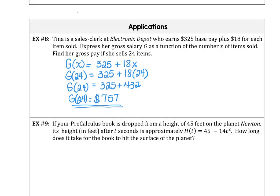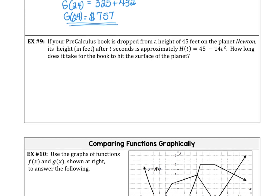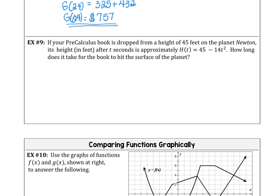Let's look at example nine. If your precalculus book is dropped from a height of 45 feet on planet Newton, its height in feet after t seconds is approximately 45 minus 14 t squared. How long does it take for the book to hit the surface of the planet? So what do you suppose we should do? I want to know when h of t hits the surface of the planet. So that would be an x-intercept at zero. And h of t is 45 minus 14 t squared. When does that reach zero?